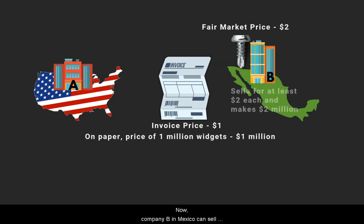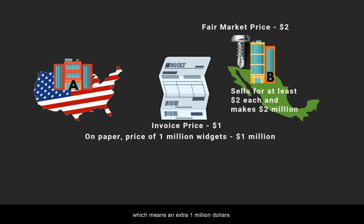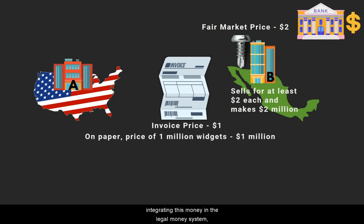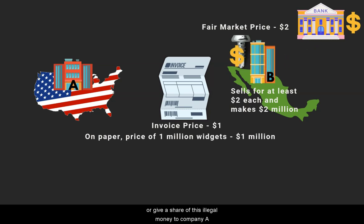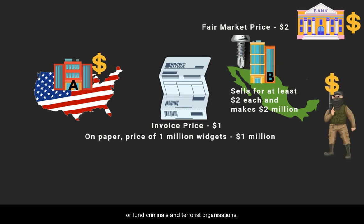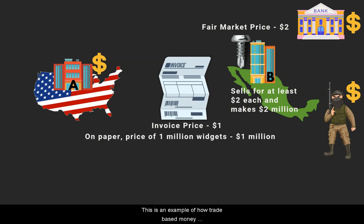Now, company B in Mexico can sell the widgets in the open market at at least $2 each and in the process can make $2 million, which means an extra $1 million. Company B now has the option of layering and integrating this money into the legal money system, or giving a share of this illegal money to company A, or funding criminals and terrorist organizations. This is an example of how trade-based money laundering works using under-invoicing.